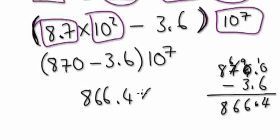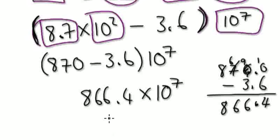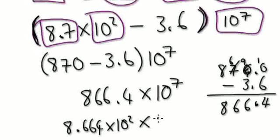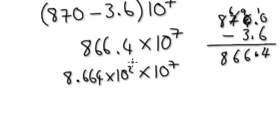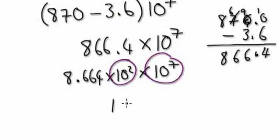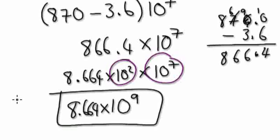Now, let's move this two places here. So you could imagine it as 8.664, because we're moving it two places, times 10 squared times 10 to the power of 7. So that equals — let's merge these two together — 8.664 times 10 to the power of 9. So this here would be your final answer.